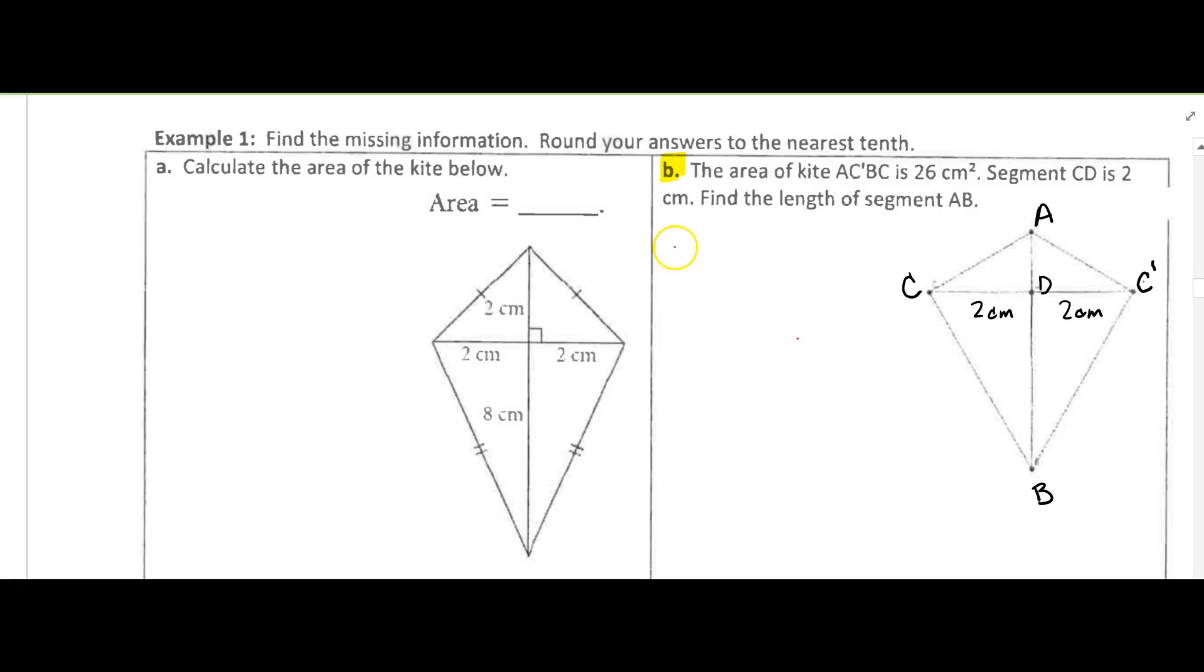Alright, so let's start out with our formula for a kite. We've got the area of a kite is diagonal 1 times diagonal 2 divided by 2, and we're trying to find segment AB. That's the segment here, this is going to be our diagonal 2, so we're going to be solving for diagonal 2.